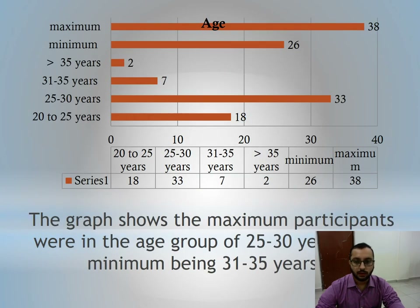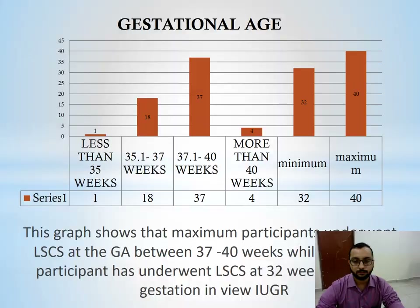This graph shows that the maximum participants were in the age group of 25 to 30 years and minimum being 31 to 35 years. This graph shows that maximum participants underwent LSCS at gestational age between 37 to 40 weeks, while one participant underwent LSCS at 32 weeks period of gestation in view of IUGR.